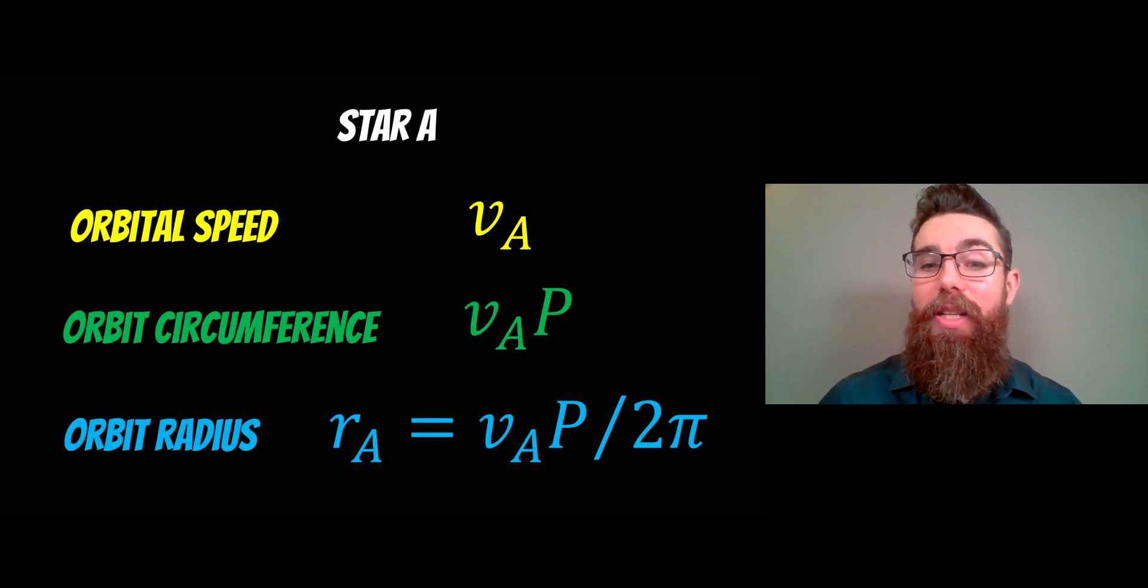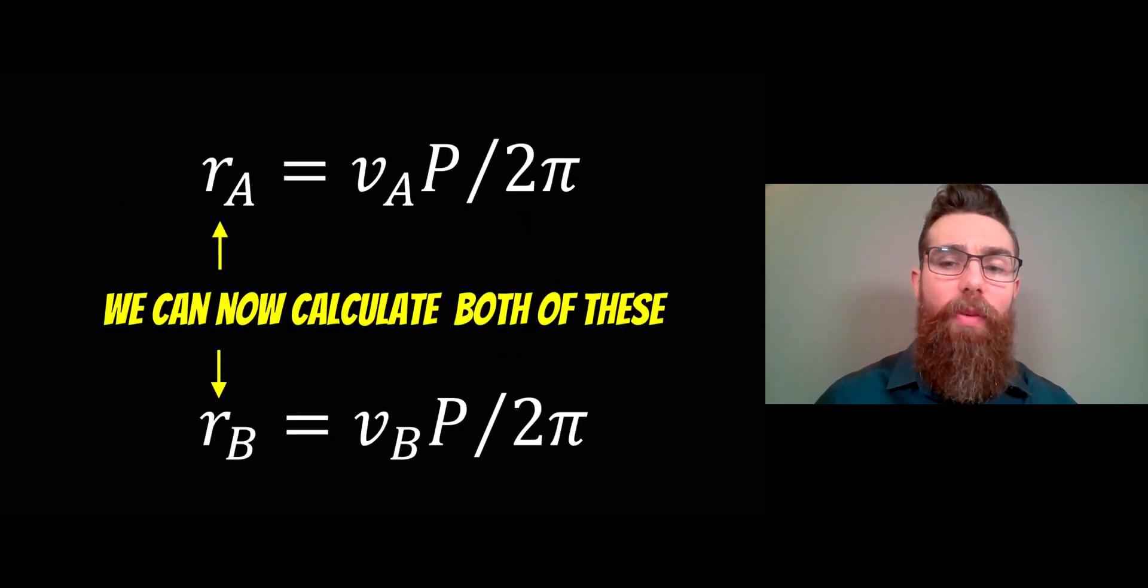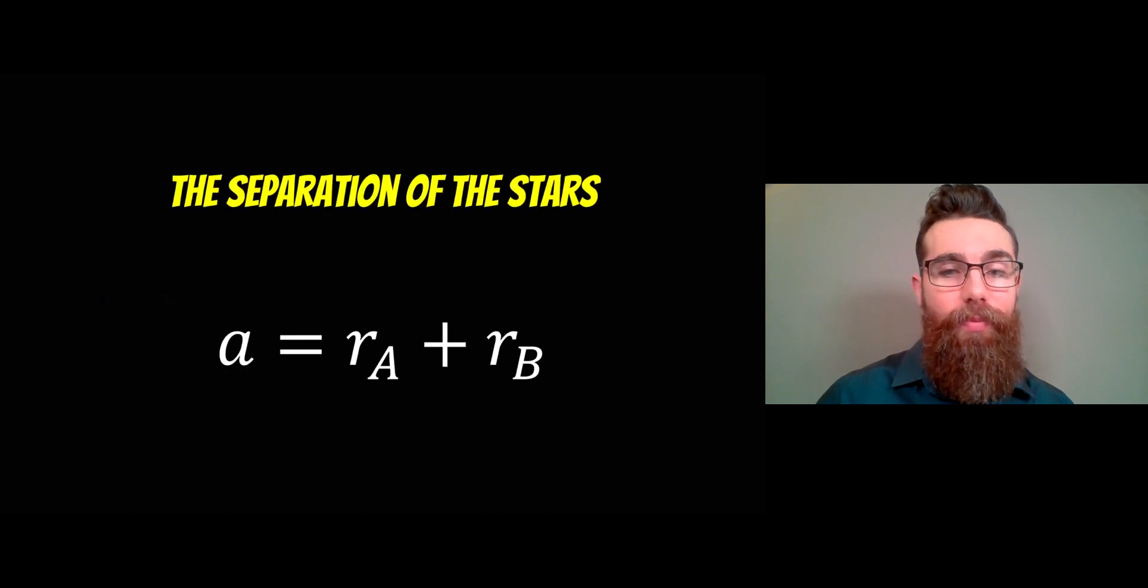We can do that for both stars, so we can work out the orbital radius of star A and the orbital radius of star B. Then the separation of the two stars is just those two added together. This will give us our a.